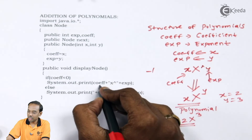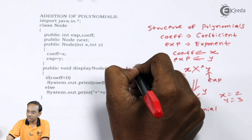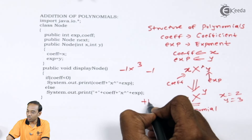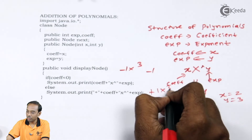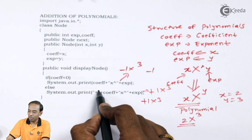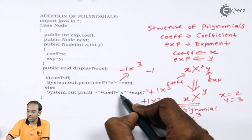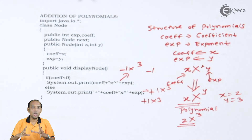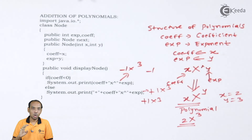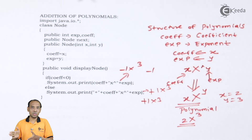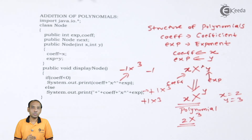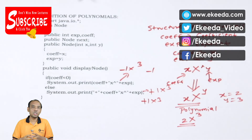If the coefficient is less than zero — for example, minus one — it will display as -x³. If the coefficient is zero or greater than zero, a plus sign will precede it, displaying as +1x³. The display function handles both positive and negative coefficients. This is how we can define a node that holds the polynomial values in the form of coefficient and exponent using a linked list.